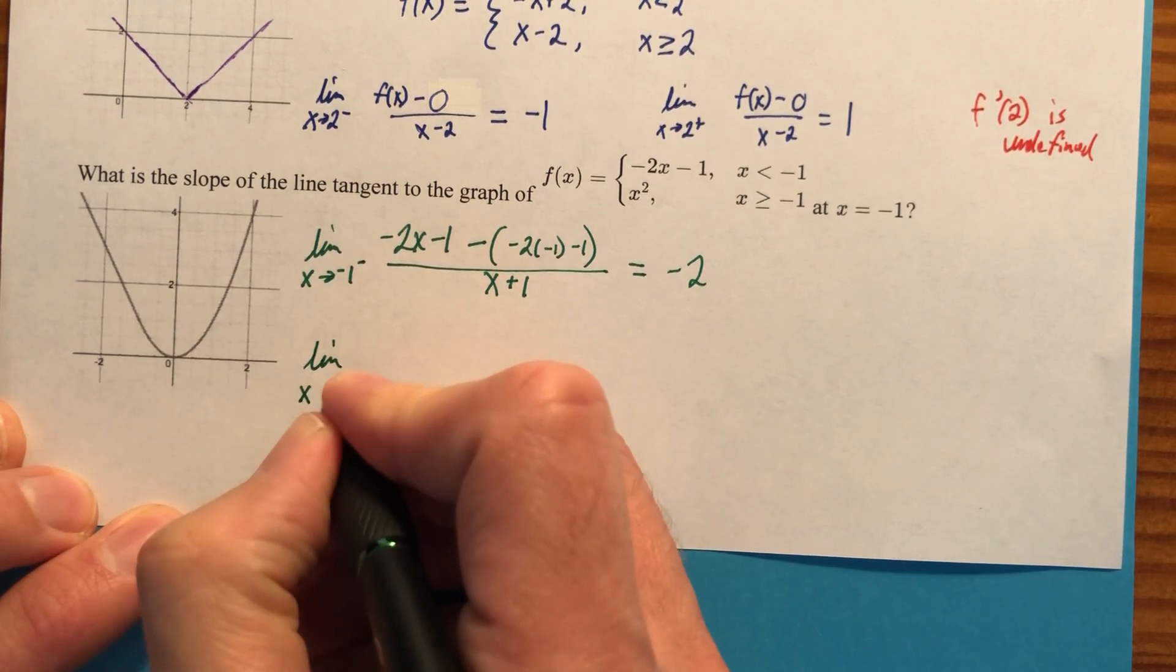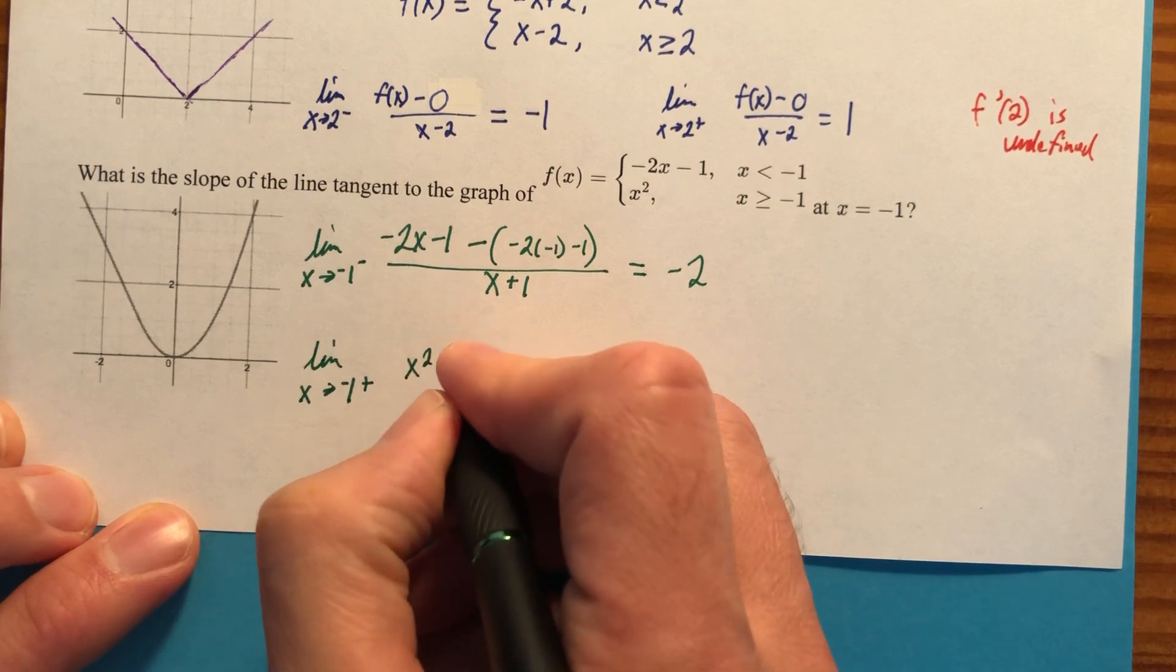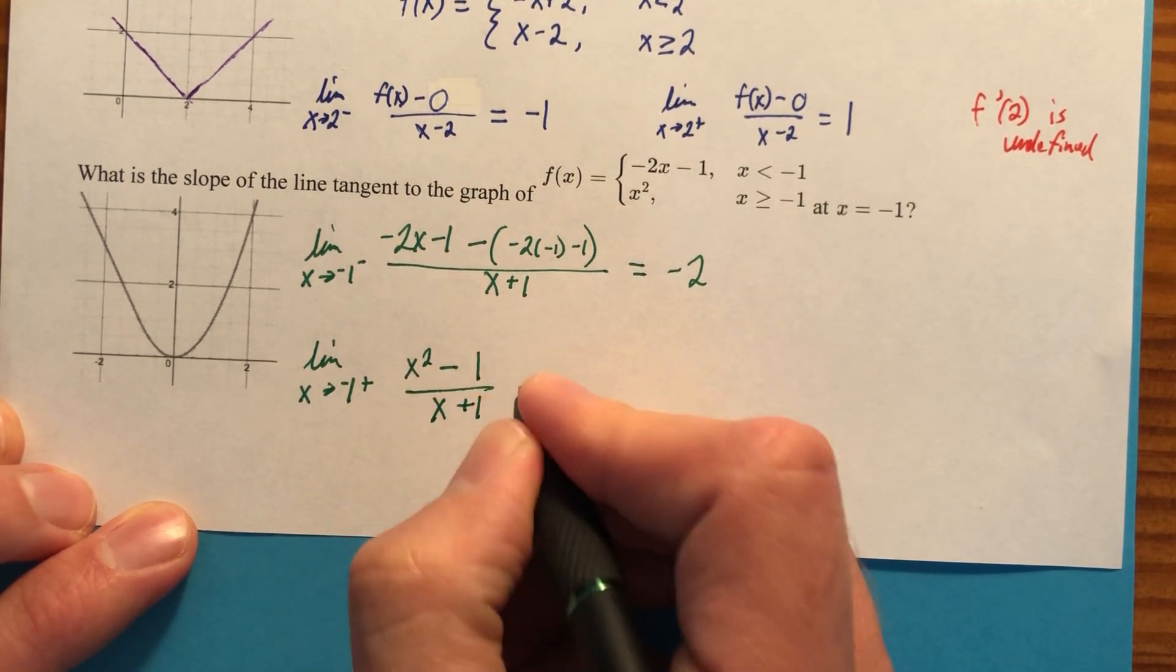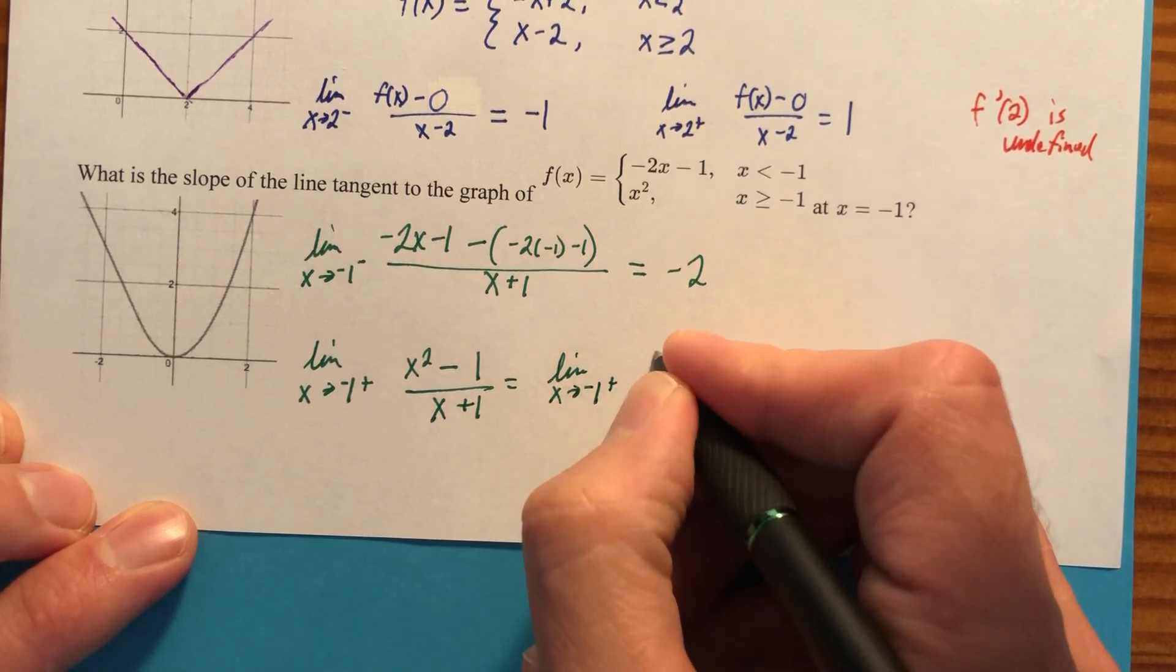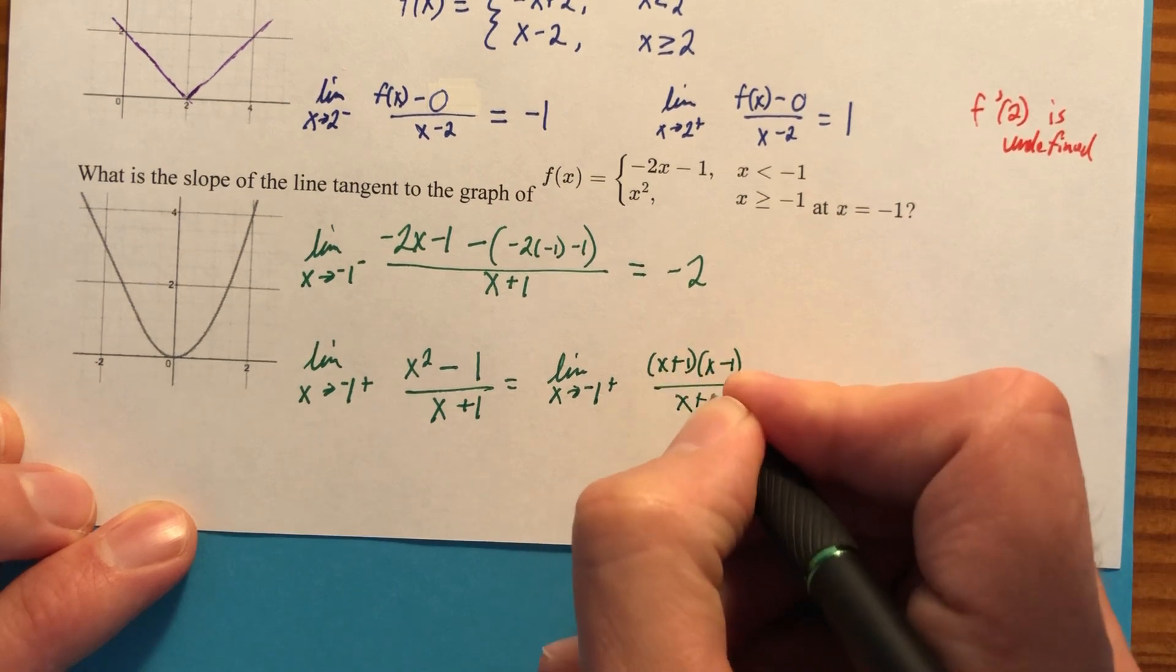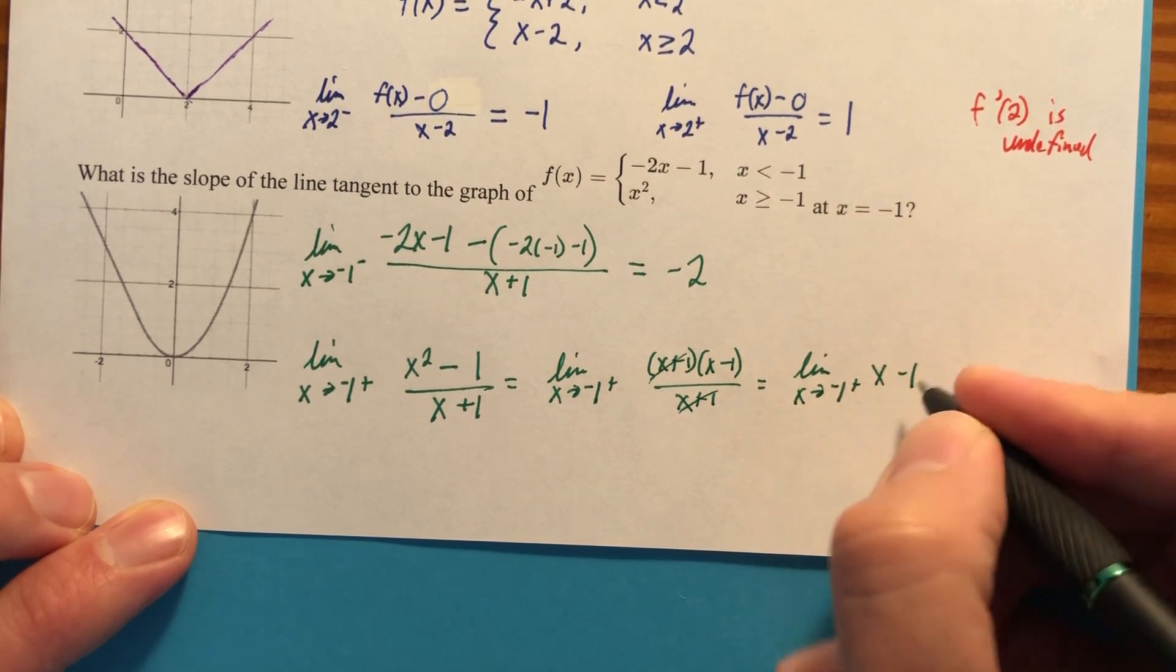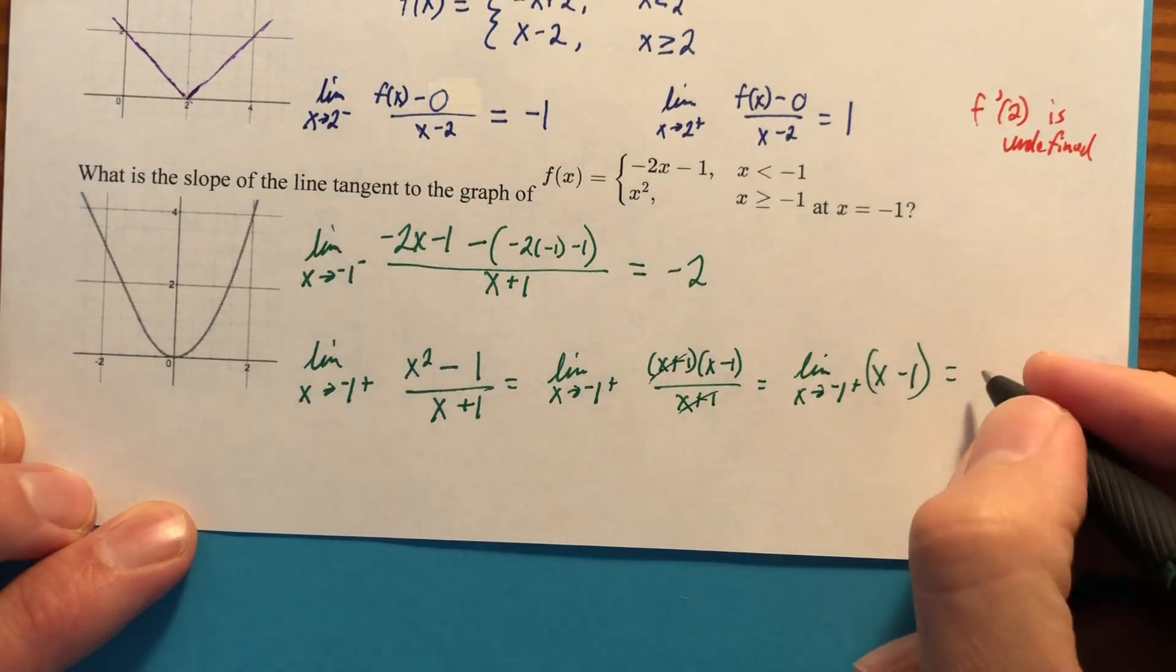Now let's approach negative one from the right. And we're going to have x squared minus, we're going to plug a negative one in here. That gives us a one divided by x minus negative one limit as x approaches negative one from the right of x plus one, x minus one over x plus one. That's going to give us, those cancel, the limit as x approaches negative one from the right of x minus one. We can plug a negative one straight in. And when we do, we have negative two.